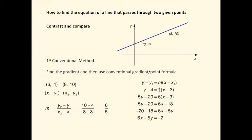Finally, how to find the equation of a line that passes through two given points. This is actually described in the Vedic mathematics book. First, we'll look at the first conventional method which uses the form y minus y1 equals m times (x minus x1).